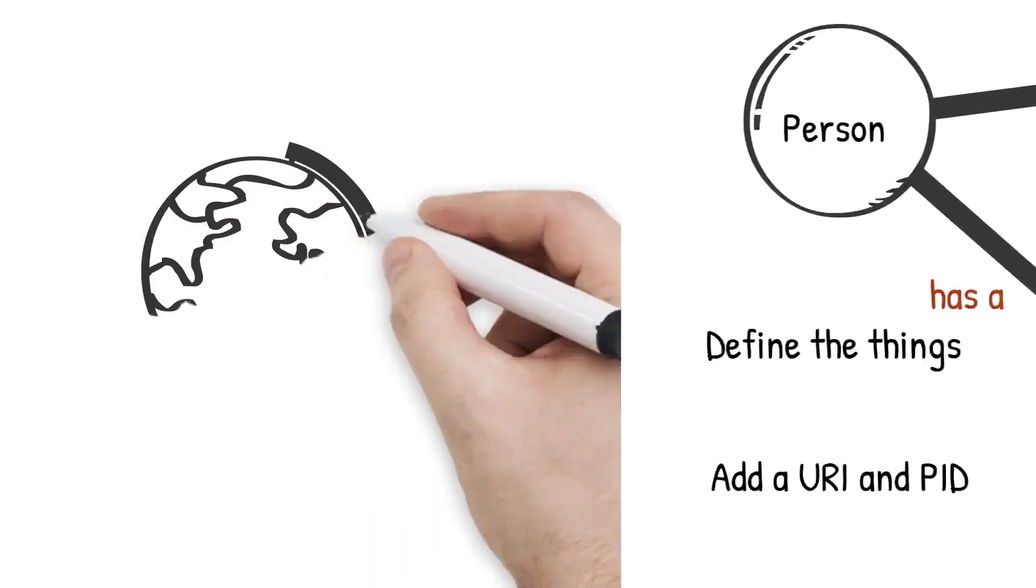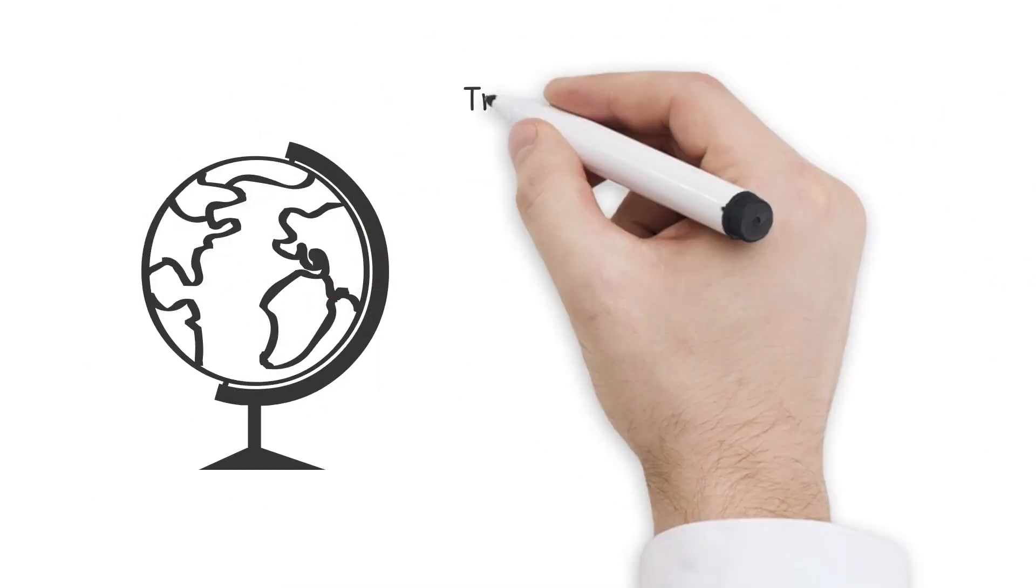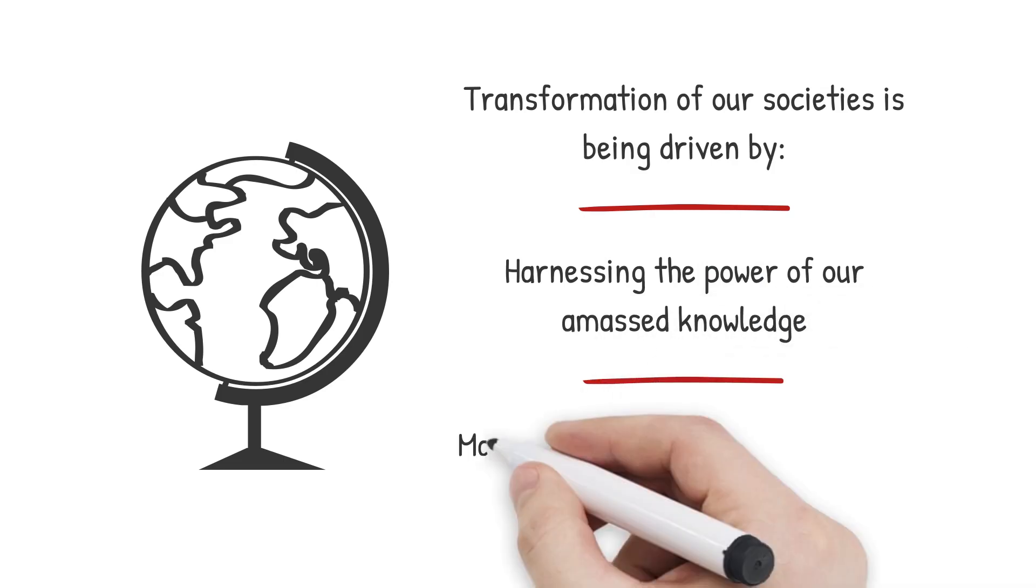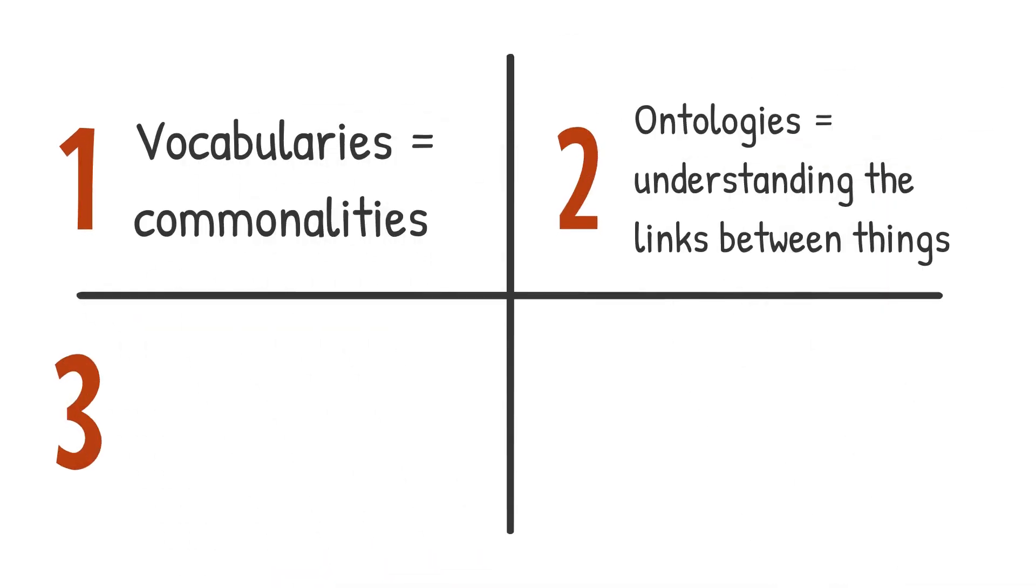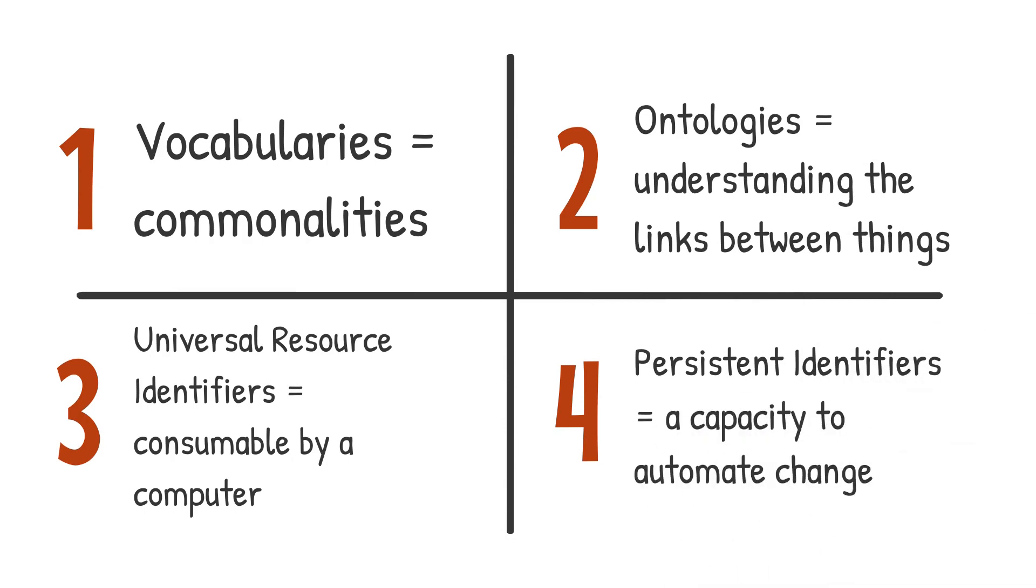The power of all our knowledge being put together into a format a computer can understand is what's driving the transformation of our societies. Vocabularies, ontologies, and things like URIs and persistent identifiers all come together to enable us to know ourselves and our societies better. With vocabularies driving understanding of our commonalities, ontologies creating an understanding of what's common across siloed pieces of data, and URIs giving computers the capacity to understand life in a more contextual, human way.